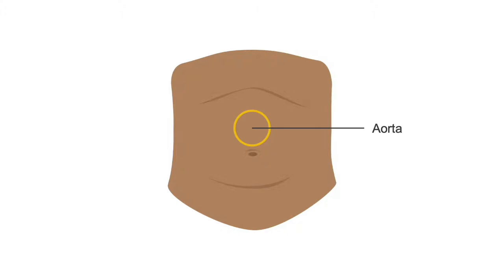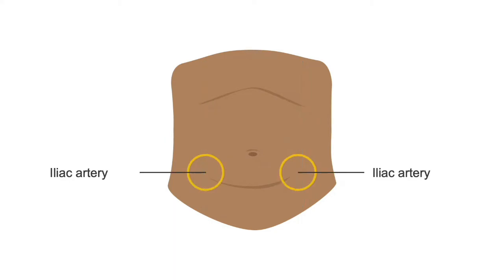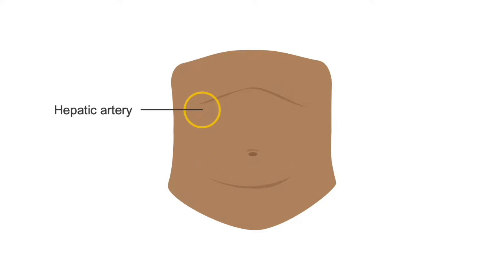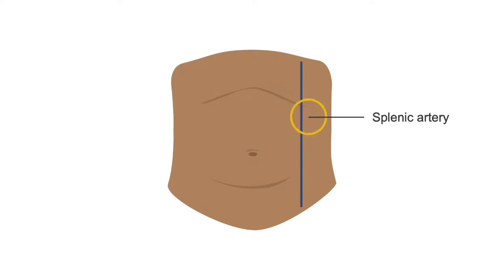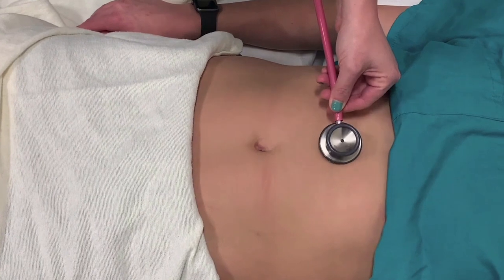Place the stethoscope about two-thirds down from the xiphoid or epigastrium between it and the umbilicus for the aorta. Place it about 3 cm superior and lateral to the umbilicus on both sides for the bilateral renal arteries — approximated by drawing a line just proximal to the midclavicular line. Place it about 3 cm inferior and lateral to the umbilicus on both sides for the iliac arteries. Place it along the right costal margin at approximately the midclavicular line for the hepatic artery. Place it along the left costal margin about 2 cm inferior and lateral moving posteriorly to the midclavicular line for the splenic artery, accounting for the posterior location of the spleen.